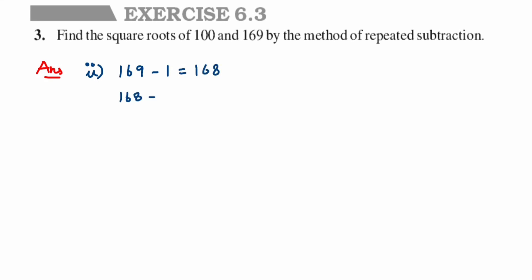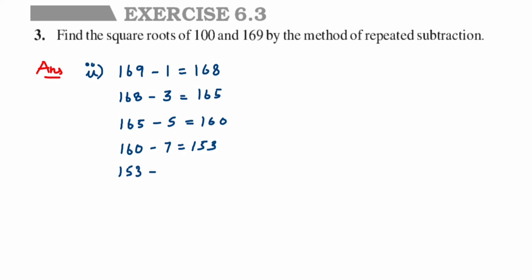Next, 168 minus 3 is 165. Then 165 minus 5 is 160. Next, 160 minus 7 is 153. Then 153 minus 9 is 144. Next, 144 minus 11 is 133. Then 133 minus 13 gives us 120. This is going to be a bit lengthy.